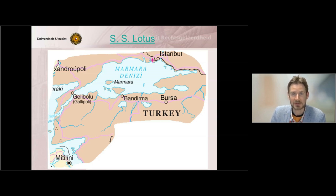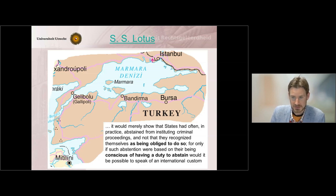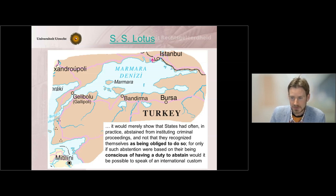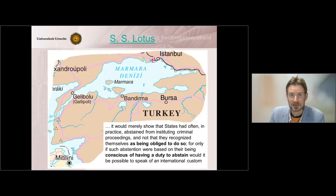France could show that there were very few such prosecutions — a constant practice of not prosecuting foreign nationals for crimes committed on the high seas. But according to the court, that was not enough, because such practice would merely show that states had often, in practice, abstained from instituting criminal proceedings, but not that they recognized themselves as being obliged to do so. For only if such abstentions were based on their being conscious of having a duty to abstain would it be possible to speak of an international custom. So France not only had to show a consistent practice, but also had to convince the court that states did not do so out of a sense of legal obligation.